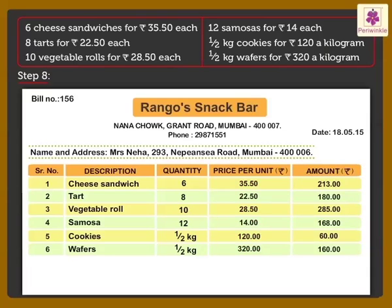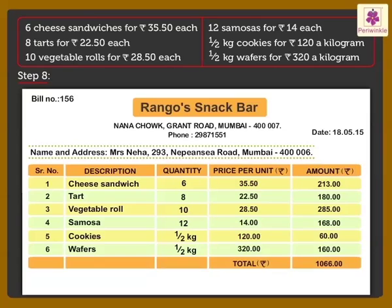Step 8: Add the amount of all the items purchased to get the grand total. Lastly, Step 9: Signature of the designated authority from the shop. And look, the bill is ready!